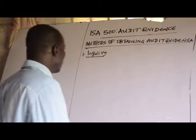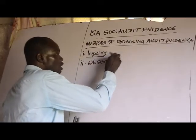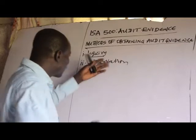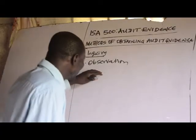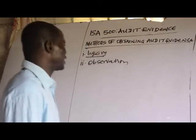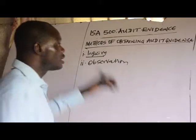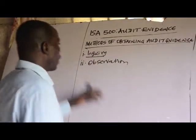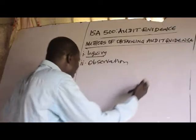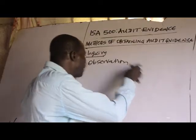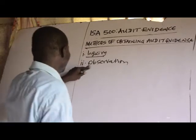Number two, we have observation. Observation involves looking at the procedures or processes performed by others. When you look at the procedures or processes performed by other people so that you will be able to understand them, that is observation.